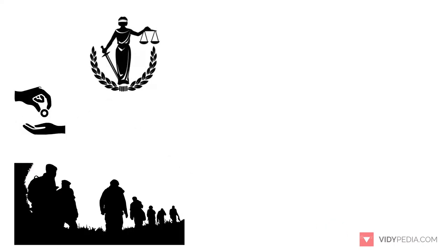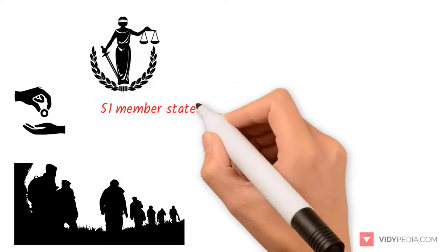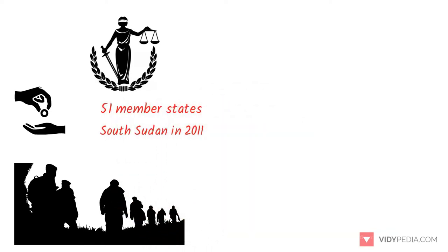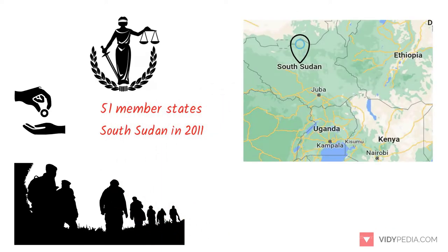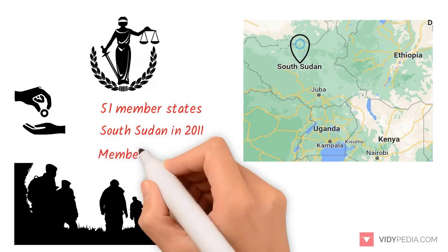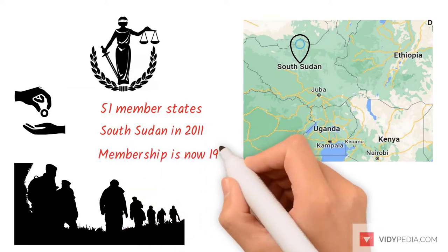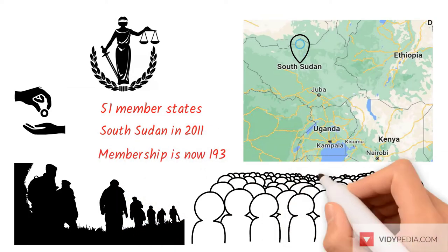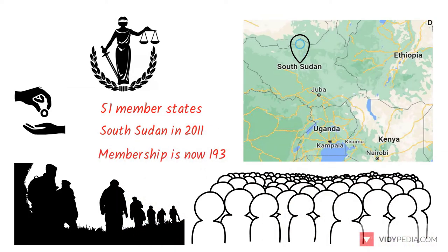At its founding, the UN had 51 member states; with the addition of South Sudan in 2011, membership is now 193, representing almost all of the world's sovereign states.